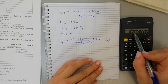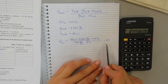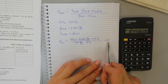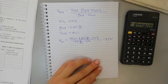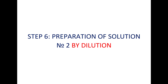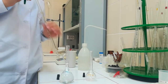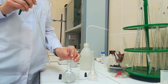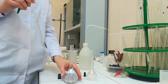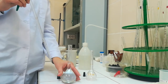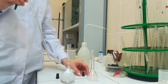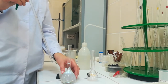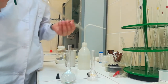We get a number which we round to 8.7 milliliters. So we have to take 8.7 milliliters from solution number one and put it into another, smaller flask. To measure 8.7 milliliters I will use a pipette.